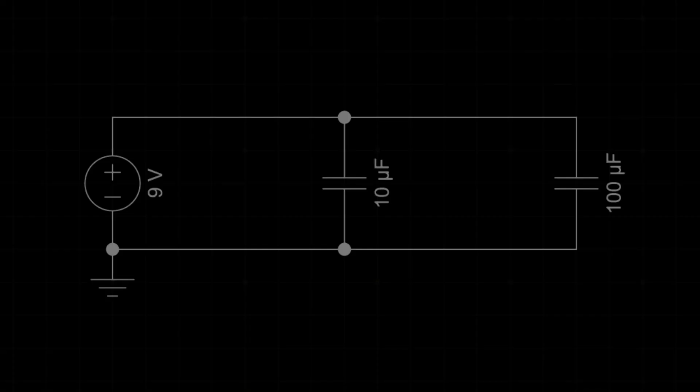Let's start with capacitors in parallel. Imagine you have a 9-volt battery connected to two capacitors in parallel. The first capacitor, C1, is 10 microfarads and the second one, C2, is 100 microfarads. How do we determine the total or equivalent capacitance in this parallel circuit?